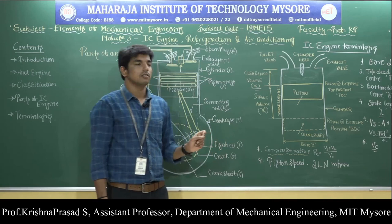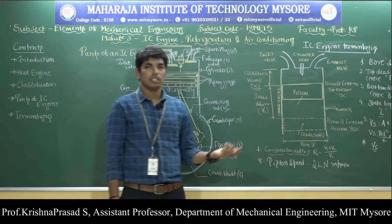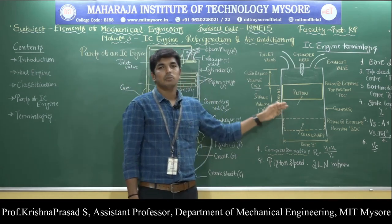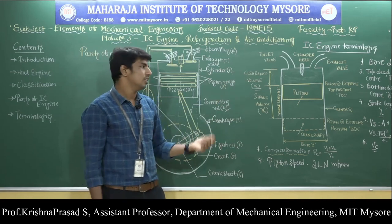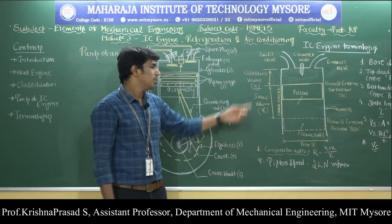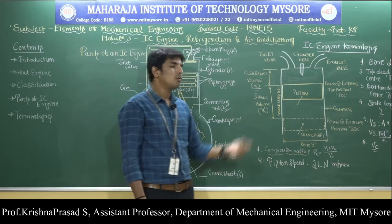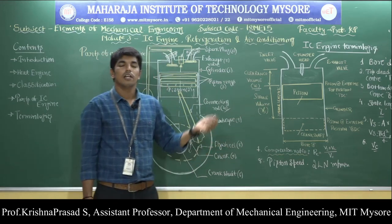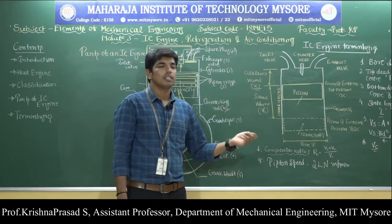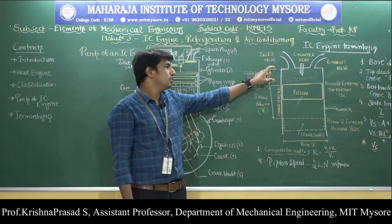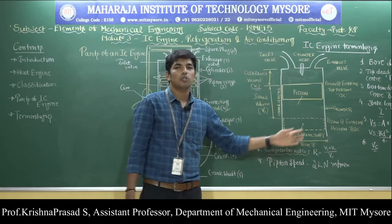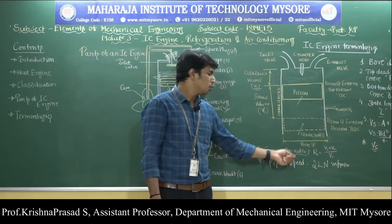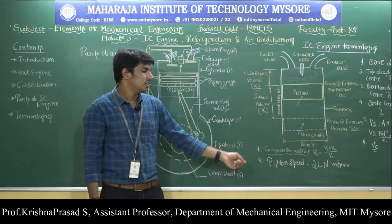To summarize the IC engine terminologies: Bore — inner diameter of the engine cylinder. TDC — extreme position of the piston near the cylinder head. BDC — extreme position of the piston near the crankshaft end. Stroke length (L) — linear distance traveled by the piston from TDC to BDC. Stroke volume (Vs) — volume covered by the piston from TDC to BDC; Vs = (π d² / 4) × L. Clearance volume (Vc) — volume of the cylinder above the piston at TDC. Compression ratio (Rc) — total cylinder volume divided by clearance volume. Piston speed — 2LN meters per minute, where L is stroke length and N is engine speed in RPM.